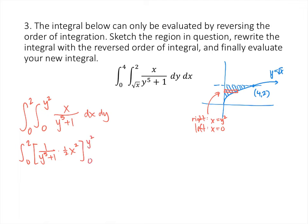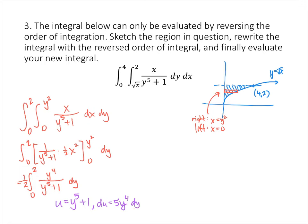Now I plug in 0 and y squared for x and subtract. When I plug in 0, I get 0. I can pull the one-half out of the integral, and plugging in y squared gives (y squared) squared, which is y to the fourth. So I get y to the fourth over (y to the fifth plus 1), integrating from 0 to 2 with respect to y. I can use the substitution u equals y to the fifth plus 1, so du equals 5y to the fourth dy. That means I introduce a factor of 5 and put one-fifth out front, giving one-tenth. The limits become: 0 to the fifth plus 1 is 1, and 2 to the fifth plus 1 is 33. So I have one-tenth times the integral from 1 to 33 of du over u, which is one-tenth times the natural log of 33. When we plug in 1 we get 0, so the answer is one-tenth times the natural log of 33.